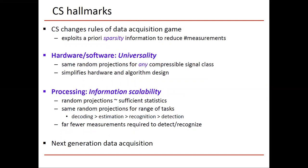So the hallmarks of compressed sensing are as follows. It really changes the roles of the data acquisition game by exploiting sparsity information to reduce the number of measurements. On the hardware and software side, we have the important property of universality, that a small number of random projections can be used for any compressible signal class. We can reuse similar hardware, similar software designs for many different types of sparsity, and this simplifies the design.